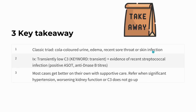Three key takeaways to remember. First, the classic triad: Coca-Cola-like urine, edema, and recent sore throat or skin infection suggestive of recent streptococcal infection. Second, for investigations: transiently low C3, plus evidence of recent streptococcal infection. Third, most kids will get better on their own with supportive care. Refer to your pediatric nephrologist if there is worsening kidney function, hypertension, or if C3 does not go up.